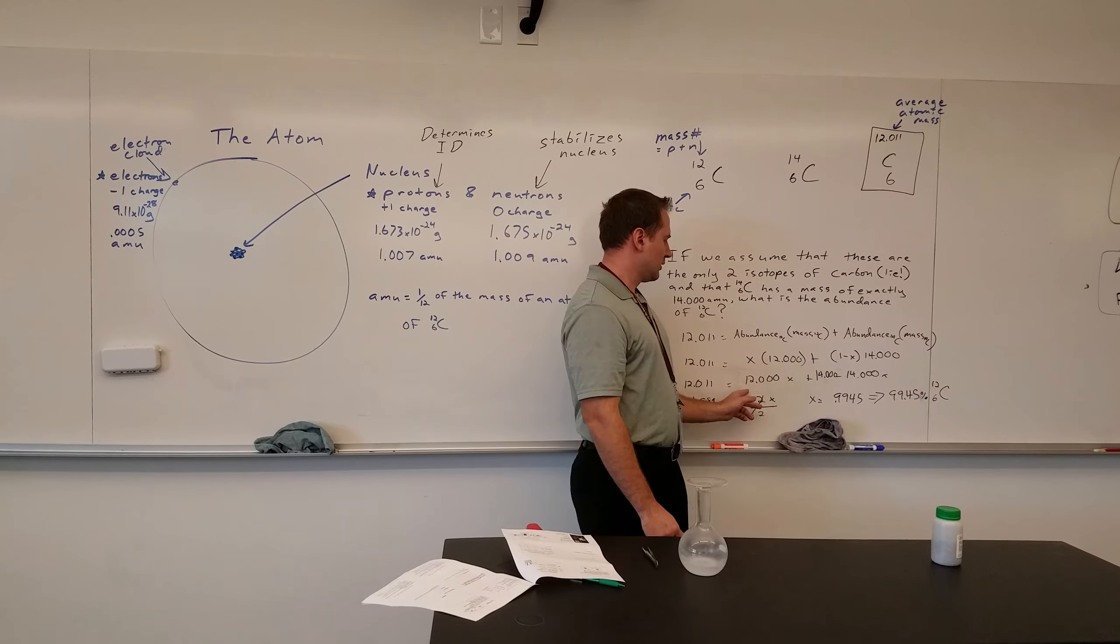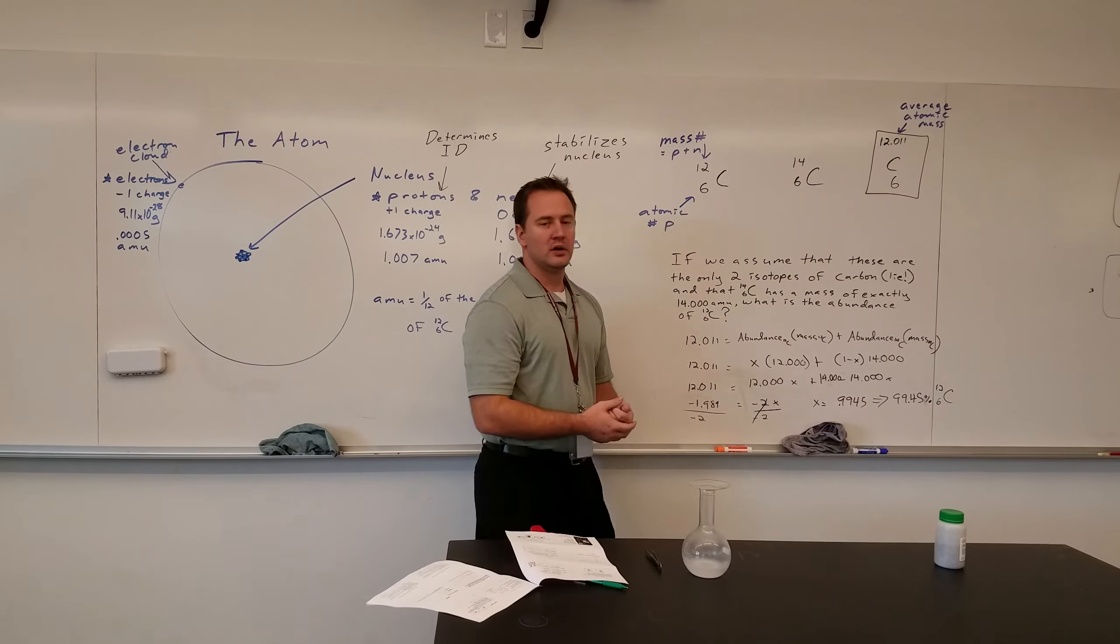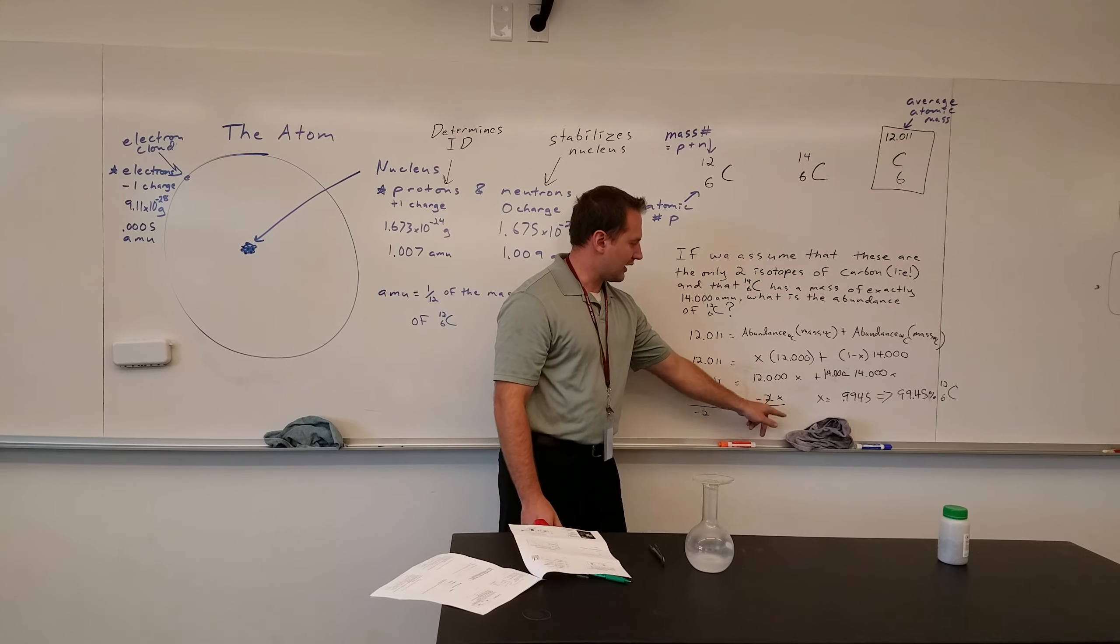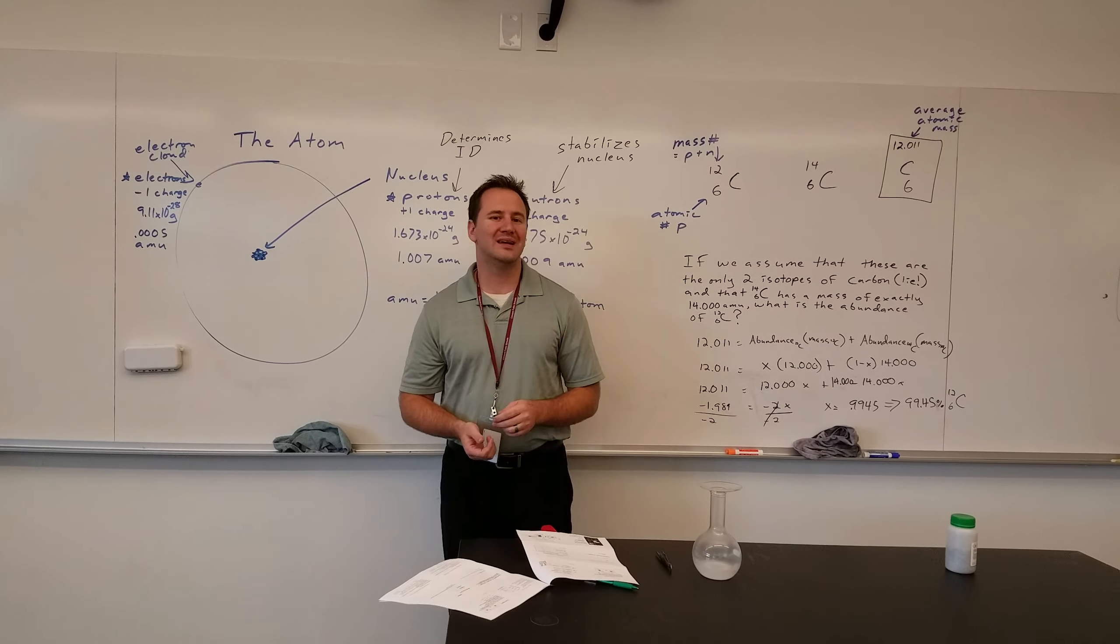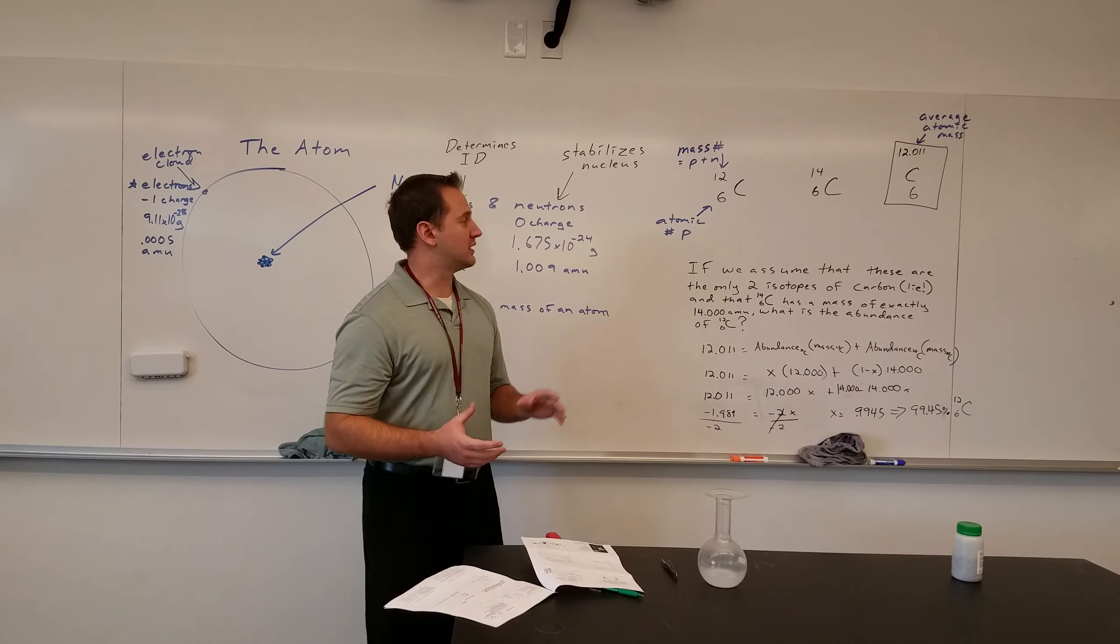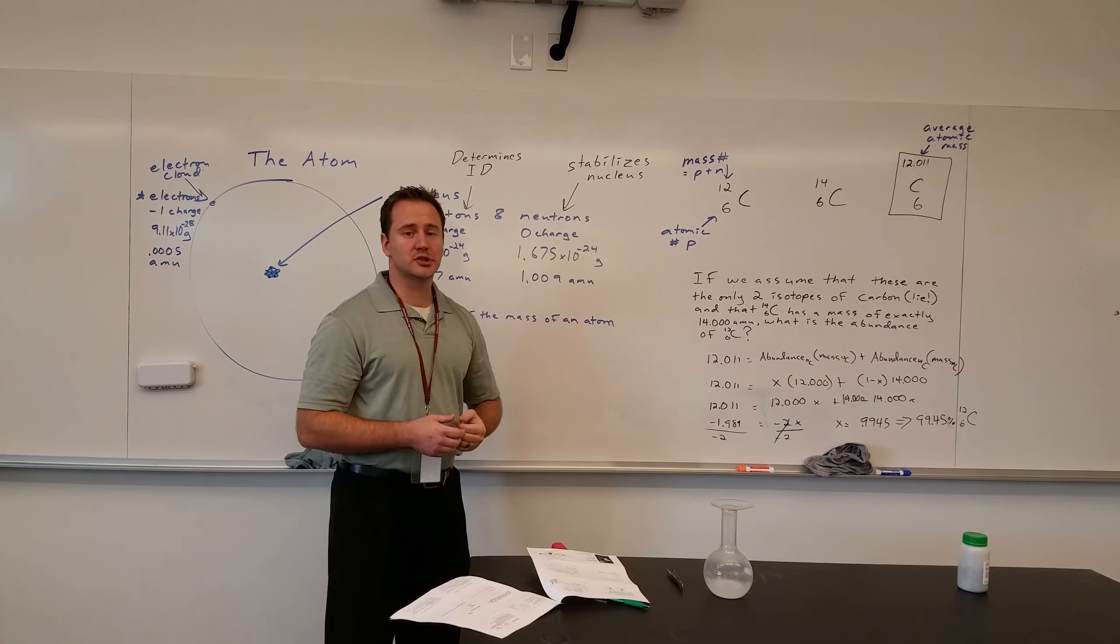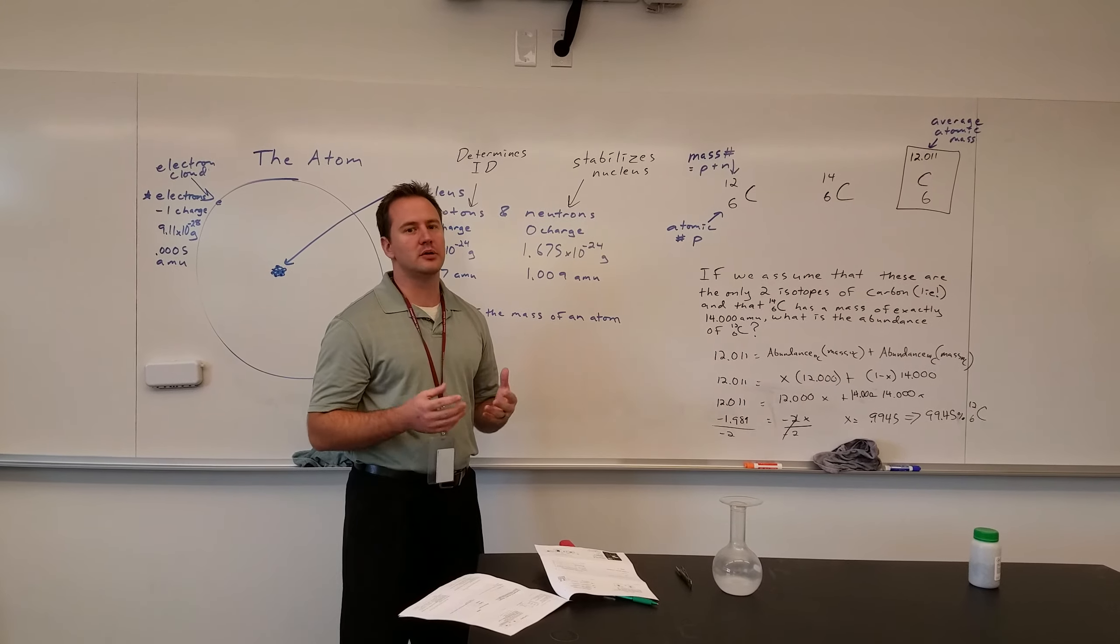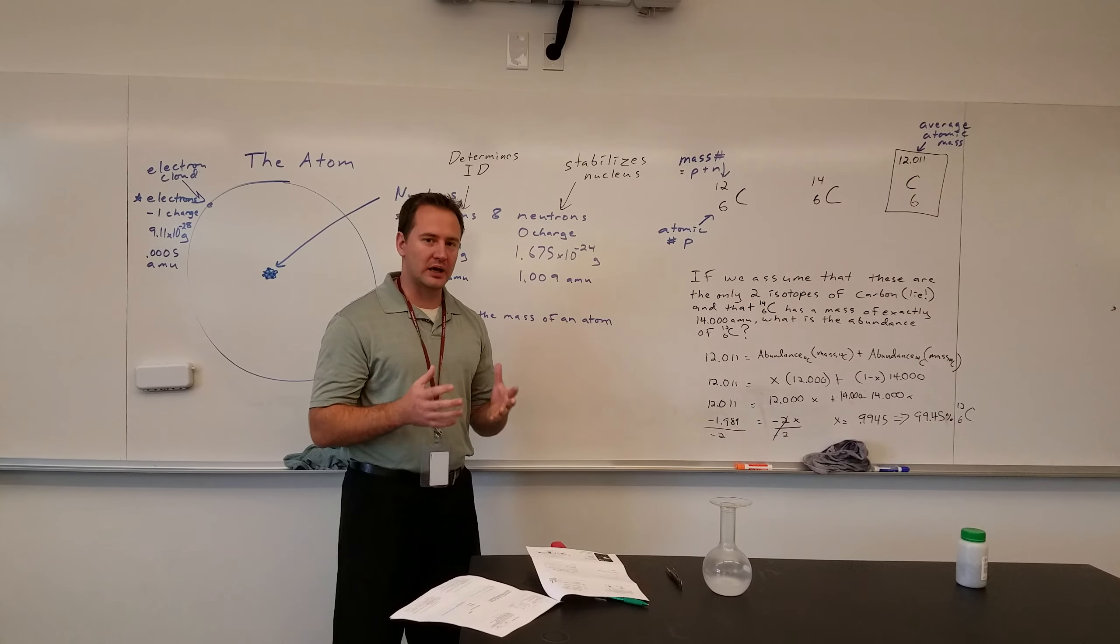Then, just distributing, we get these four values, combining like terms, and then isolating the variable, we get that x is equal to 0.9945, which means that if those were the only two isotopes of carbon, and that was the average atomic mass, 99.45% of the atoms of carbon would be carbon-12.